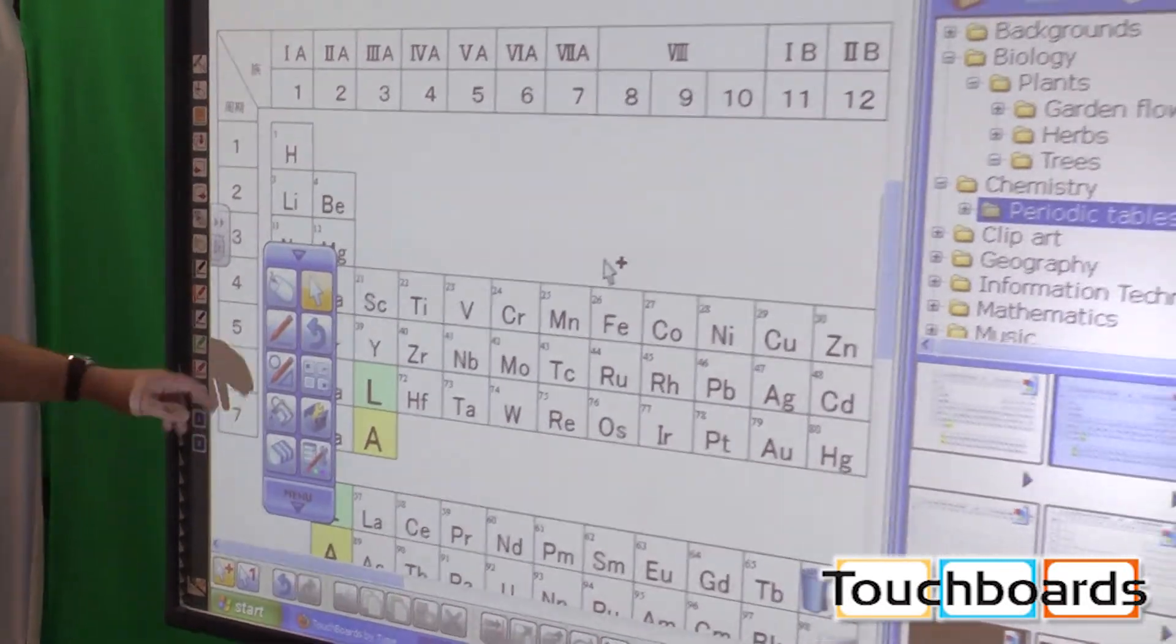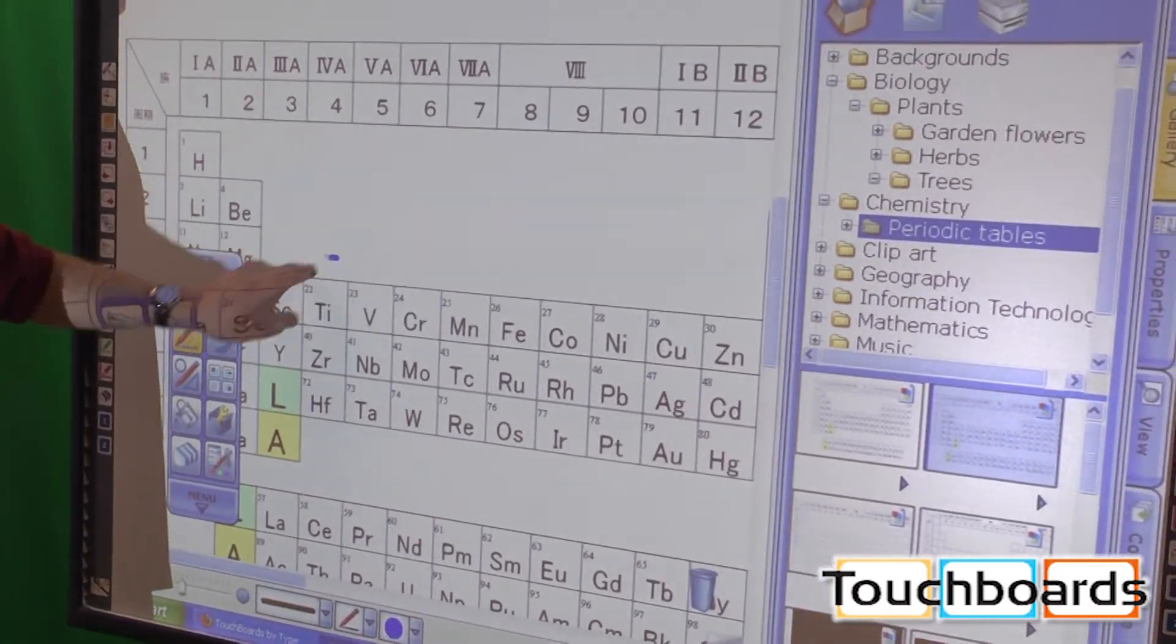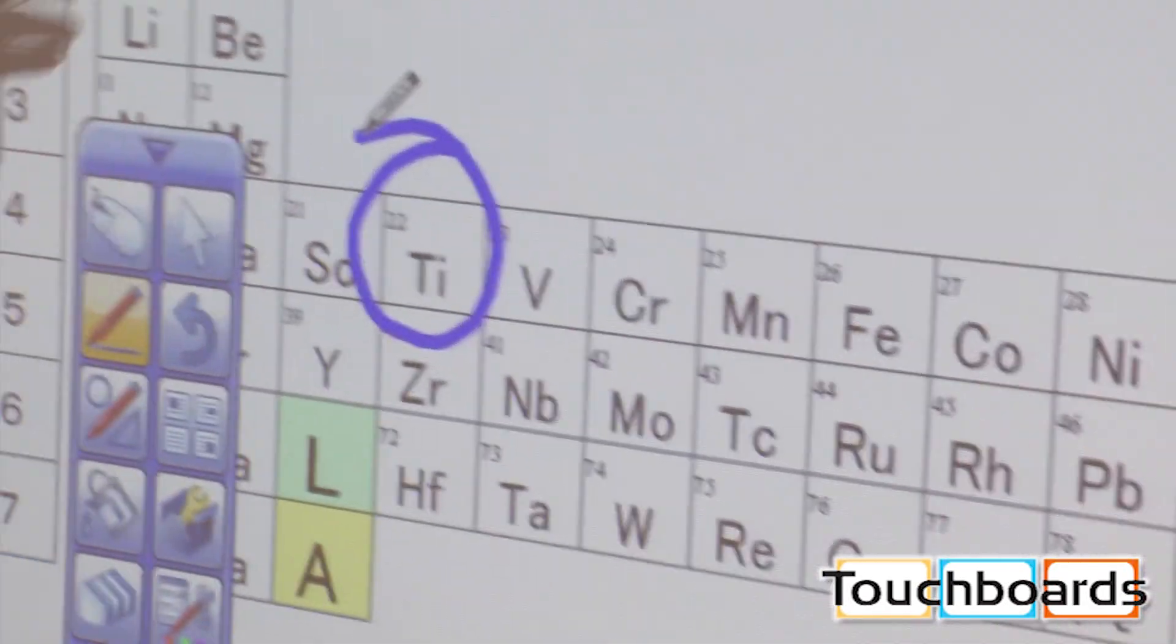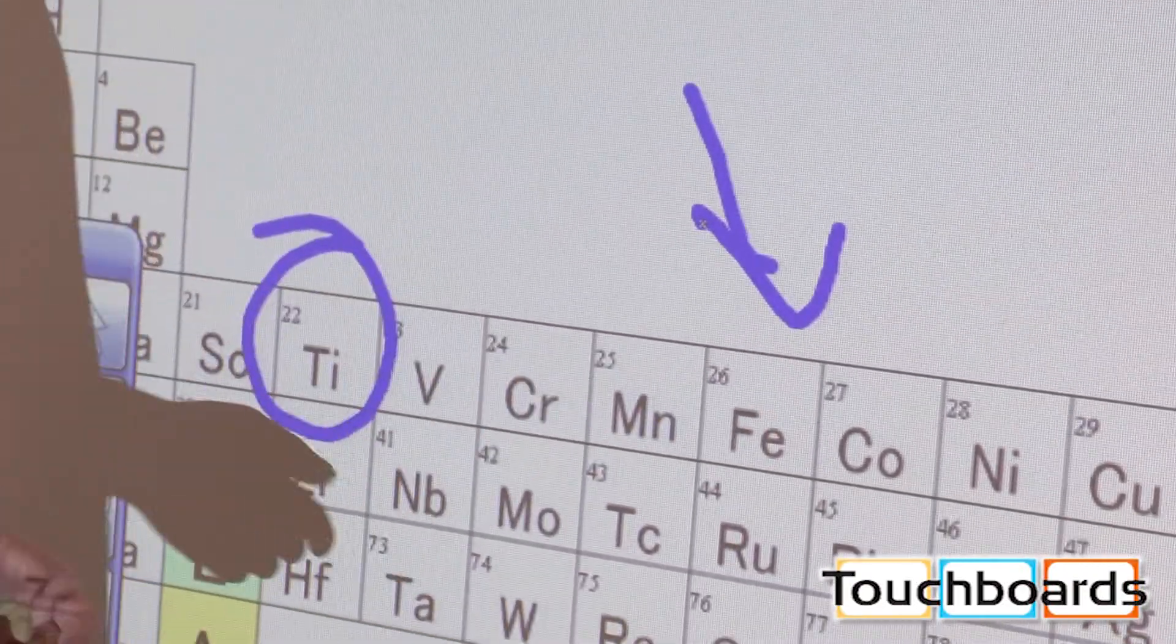Now you can then select the pen. You can circle titanium, you can highlight, you can draw arrows. You can do anything you want.